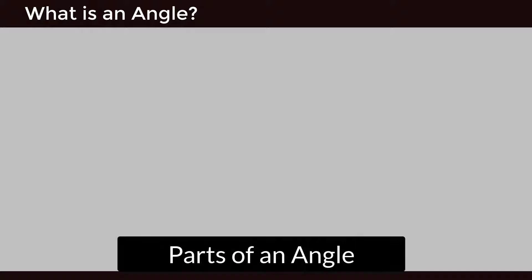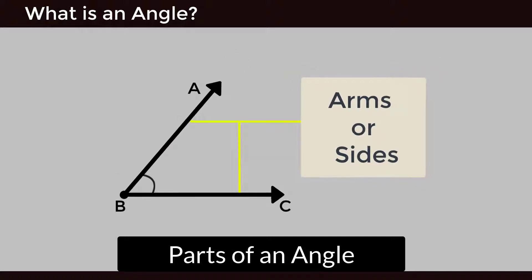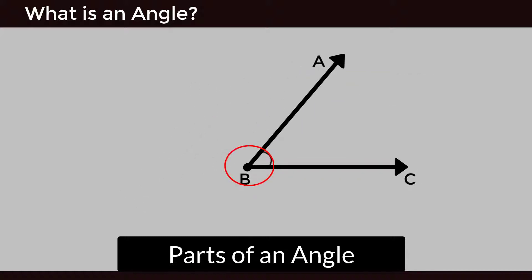Parts of an angle: The two rays forming an angle are called arms or sides of the angle. The common endpoint of the two rays forming an angle is called the vertex of the angle.